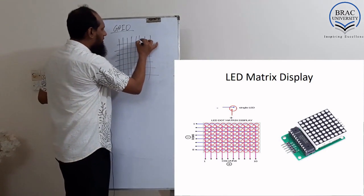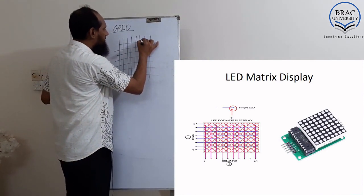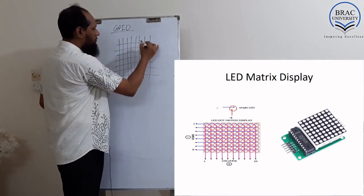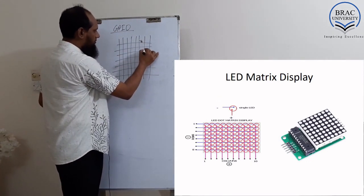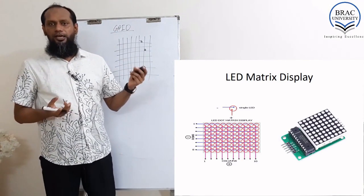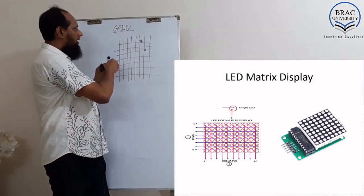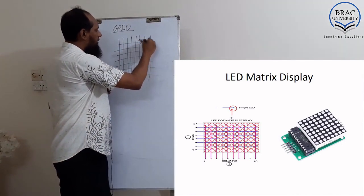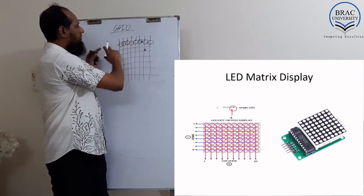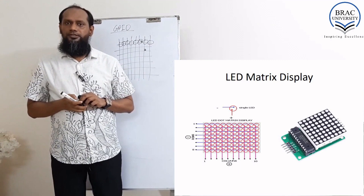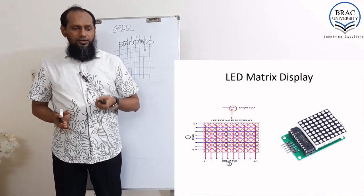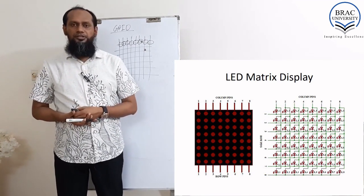At each intersection, there is an LED. I am just showing 2 or 3 here. Each intersection has one LED, so we get an 8 by 8 LED matrix. That is the concept of LED matrix display.